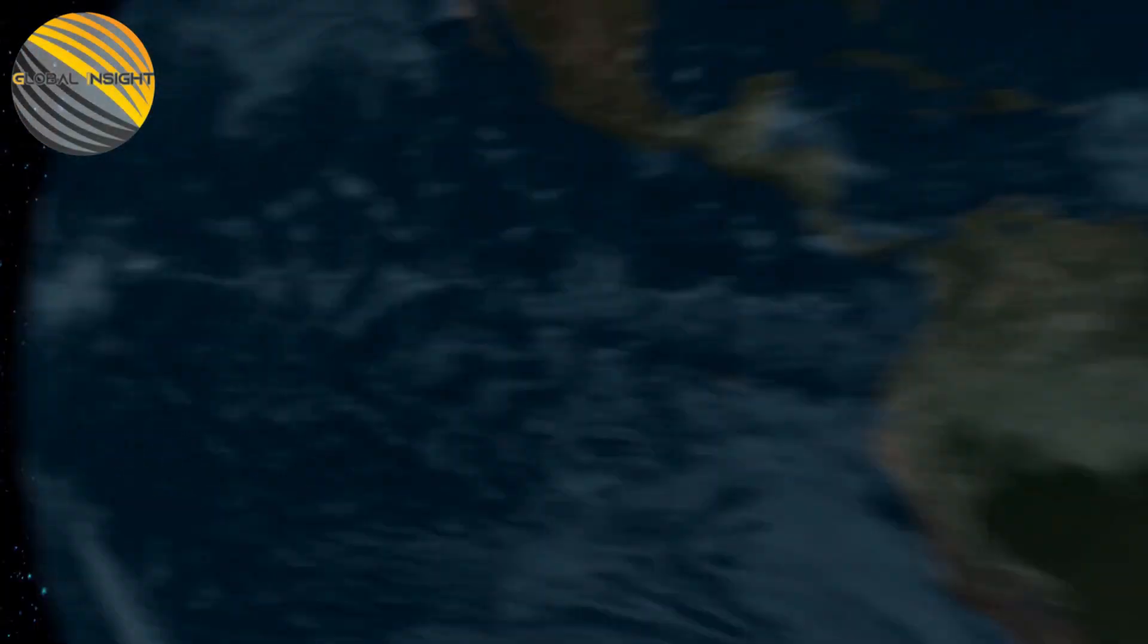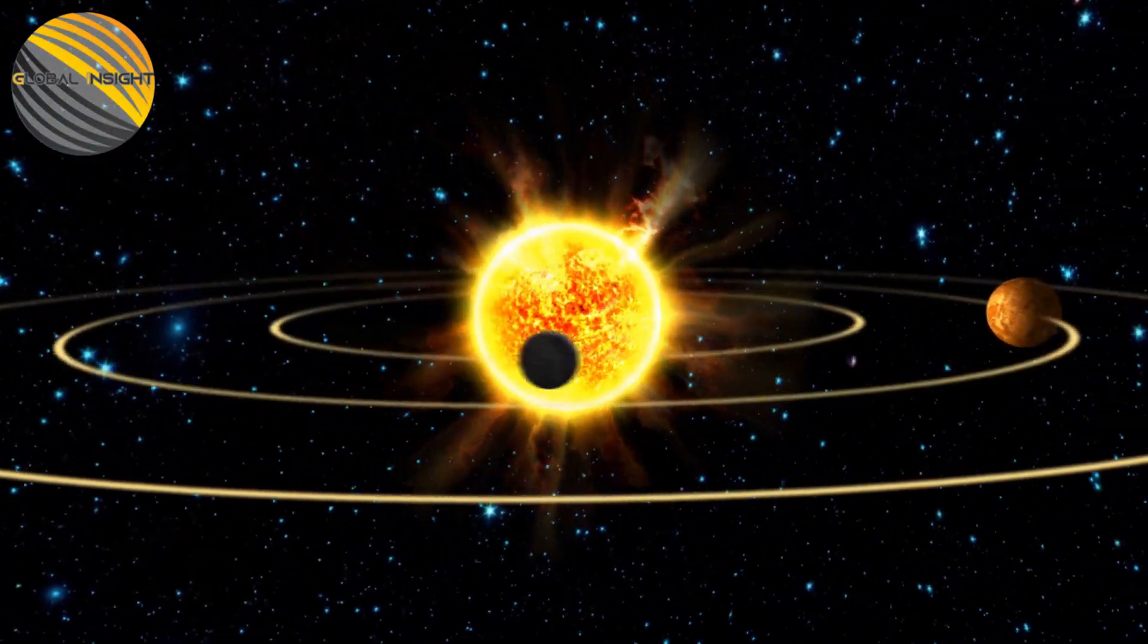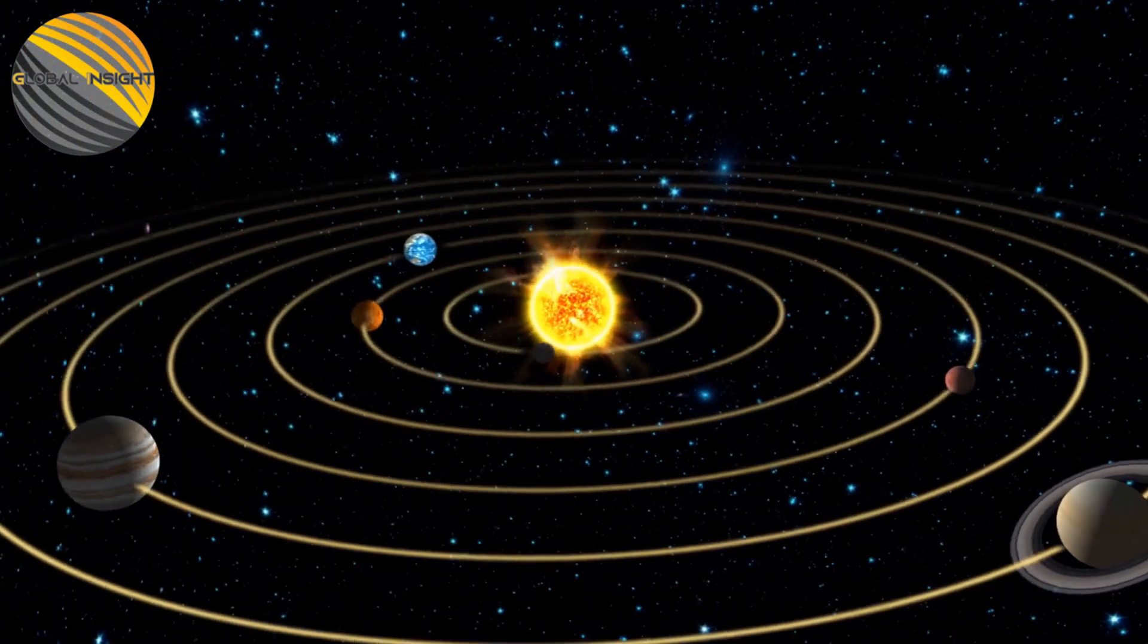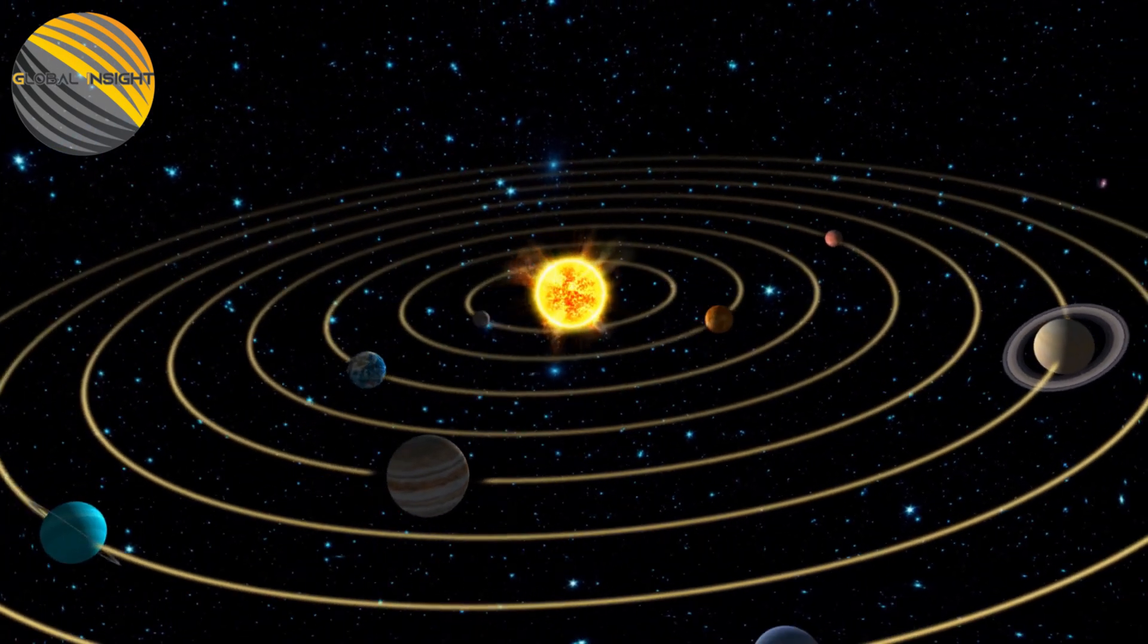All the planets in our solar system are visible until the end of the year. On average, such occurrences occur every one to two years.